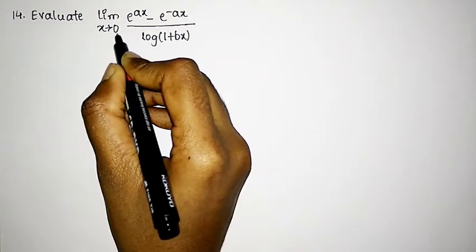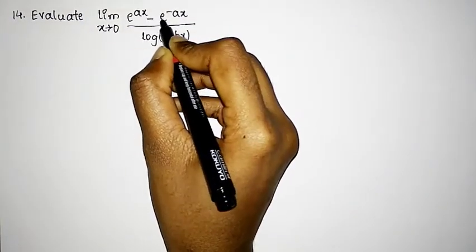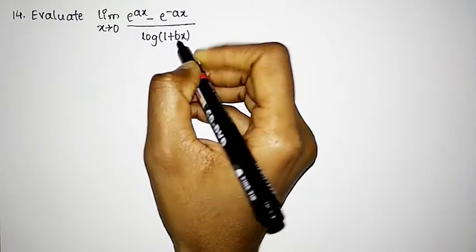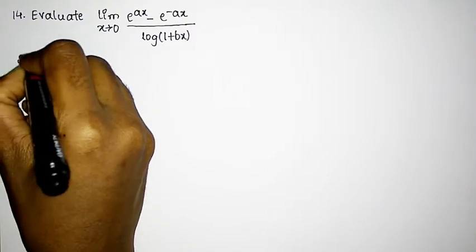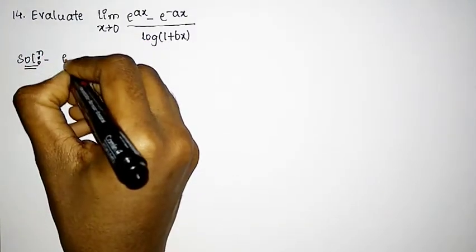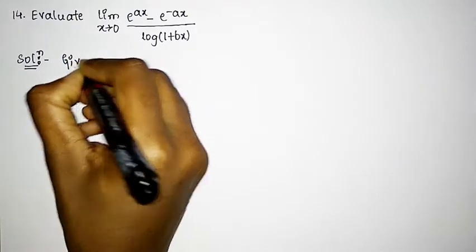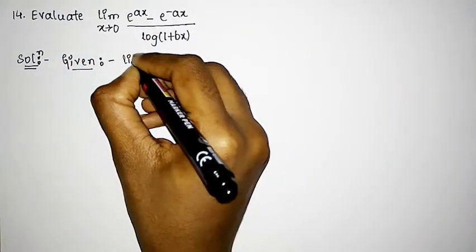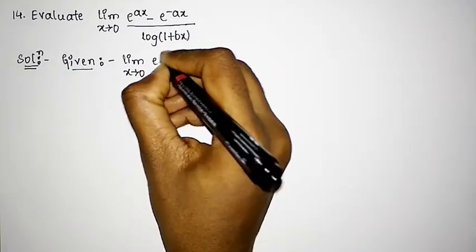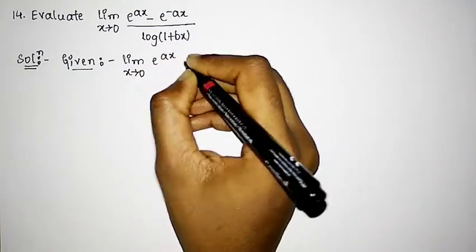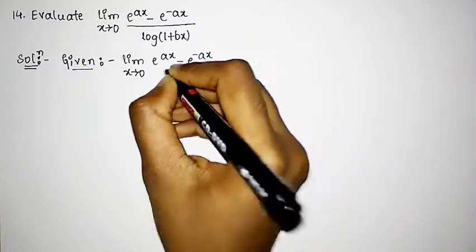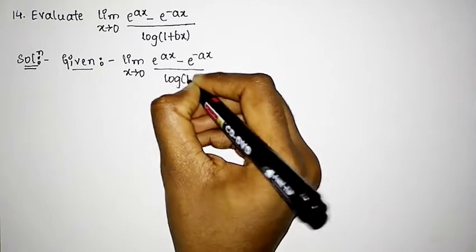Evaluate the limit as x tends to 0 of e to the power ax minus e raised to minus ax, whole divided by log of 1 plus bx. So we shall write the given: limit as x tends to 0 of e raised to ax minus e raised to minus ax, whole divided by log of 1 plus bx.